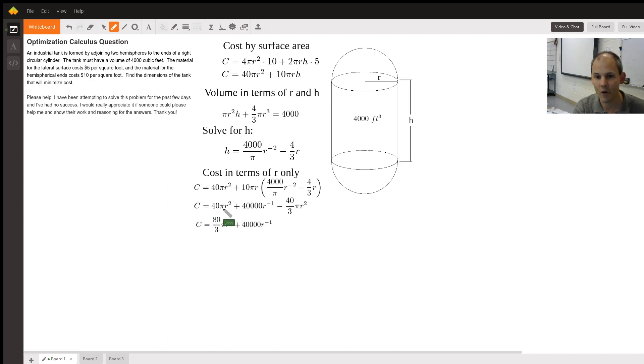And we have 40πr², and we have 40/3πr² subtracted here. I subtract those like terms, I get 80/3πr² + 40,000r⁻¹. That is a function of a single variable, which I can do a derivative of.